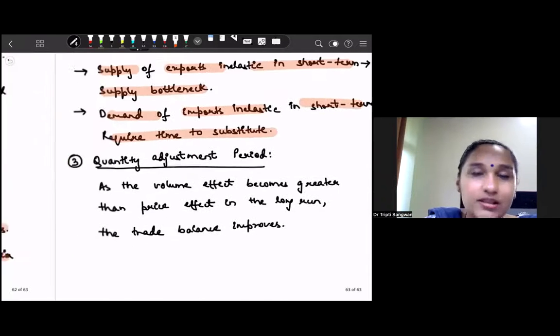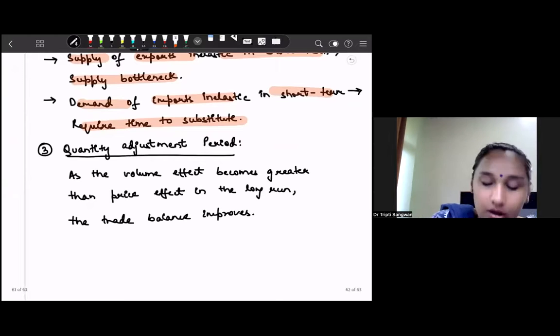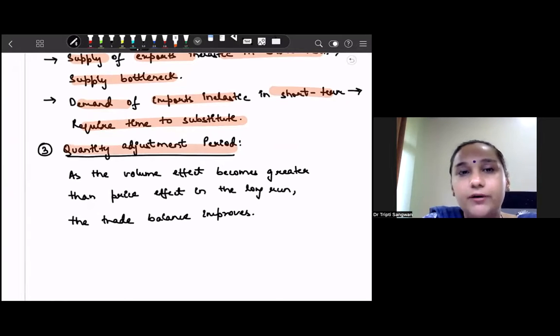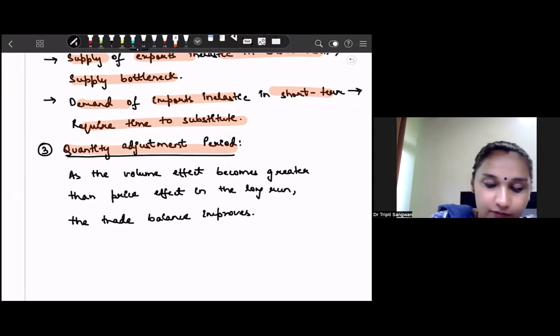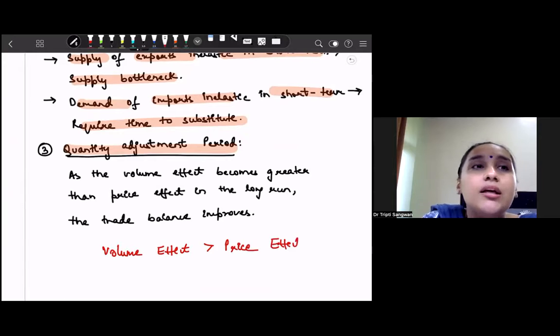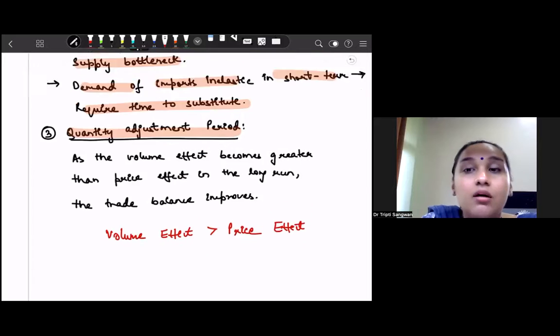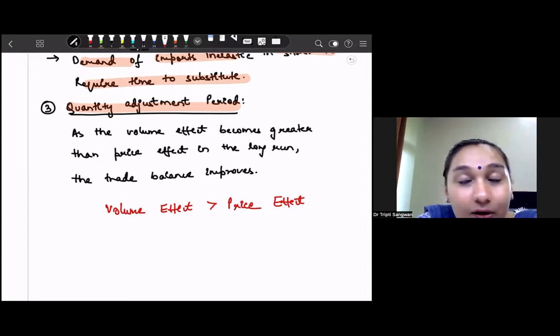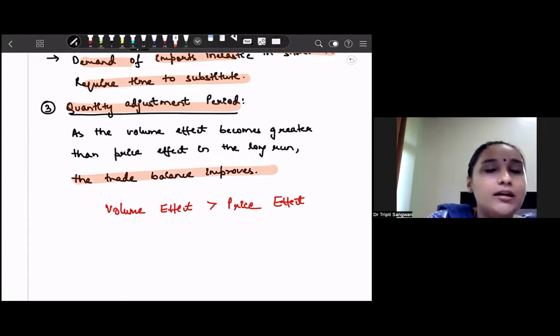So this is termed as the second reason. Third is quantity adjustment period. So we say that as the volume effect becomes greater than price effect. But when does this happen? Volume effect means that the quantity, the demand is increasing more as compared to the changes in the prices. It means we are demanding more, there is more demand for our exports, we are reducing imports much more. So when this volume effect becomes greater than price effect, this will happen only in the long run, then we say that trade balance improves.